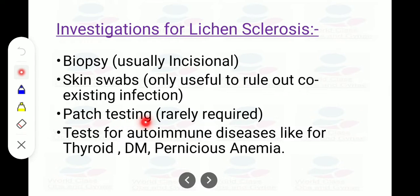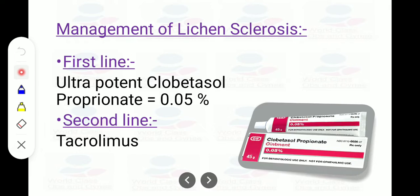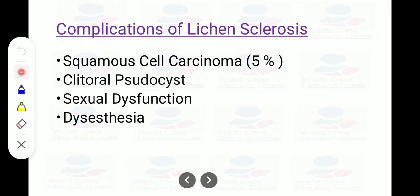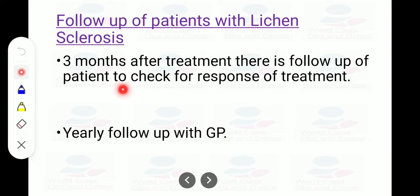Patch testing is rarely required per BASCH guidelines. Associated autoimmune conditions include thyroid disease, diabetes, colitis, and pernicious anemia, so tests for these may be done. First-line management is ultra-potent topical steroid 0.05% (clobetasol propionate). Second line is tacrolimus. If untreated, lichen sclerosis may result in squamous cell carcinoma in 5% of cases, pseudocyst formation, sexual dysfunction, or dysaesthesia. Follow-up is three-monthly after treatment, then yearly with the GP.